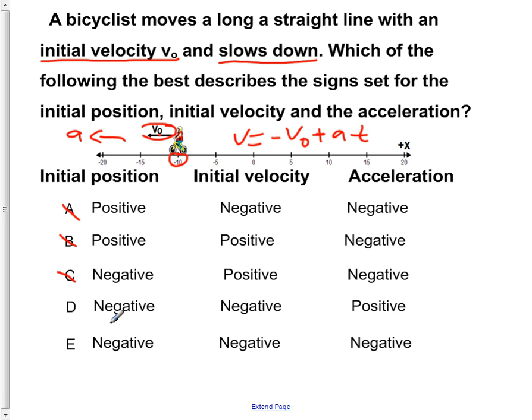So, with that being said, we can now see that our answer is D. So, our initial position is negative. Our velocity is in the negative direction. And because we're slowing down, our acceleration has to be in the opposite direction of our initial velocity. So, it's in the positive direction then, in order for the bicyclist to slow down.